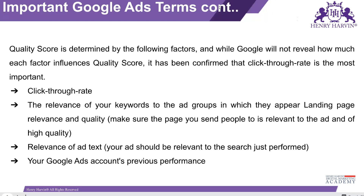It will also affect the image of Google because everything is showing on the Google search engine. That's why they want to make relevant and good ads appear on top. The more people click, the more Google earns. So Google always wants to show good ads so that the advertiser gets higher CTR and Google earns more. Image relevance of ad text and performance history also affect the quality score.